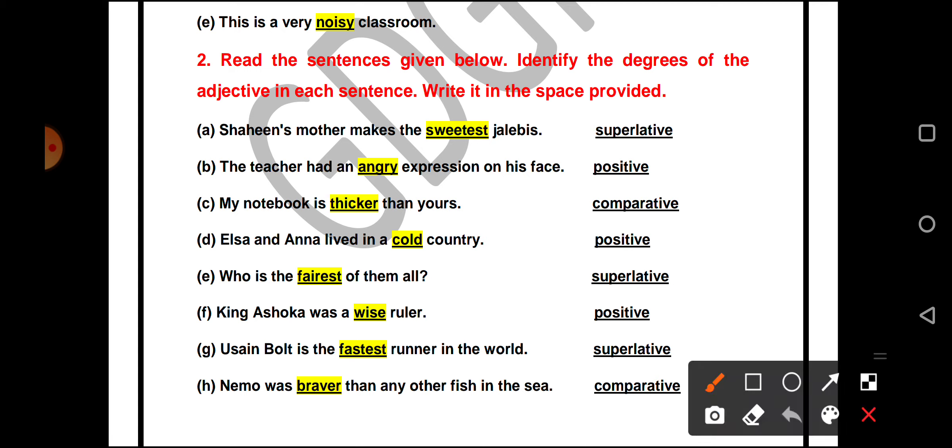Usain Bolt is the fastest runner in the world. You have EST here. So it will be superlative. Nemo was braver than other fish in the sea. You have ER added to the word brave. So it will be comparative.